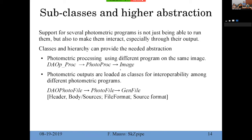To allow moving between programs and using the output of one in another, I also created subclasses for files. There is a general file class, then a photometric file subclass that represents a list of sources, and the system understands how a photometric file is structured — not just the sources but also the format in which they are written, because different programs can have the same information written in different positions and formats. To pass a file from one program to another, you have to translate it.